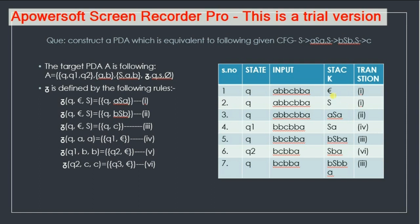Initially the stack was empty. Then a start symbol gets into the stack, and S derives itself as ASA according to the first transition. Now the top of the stack and the first input symbol are both the same, so A will get popped out of the stack, and S will derive itself as SBS according to transition 2. Now both B are the same, hence B will be popped out.